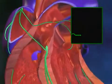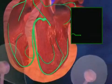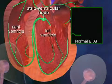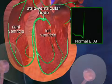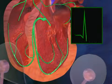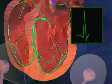The electrical signal then travels through the atrioventricular node, or AV node, and into the ventricles. This signal causes the ventricles to contract, pumping blood to the lungs and body.